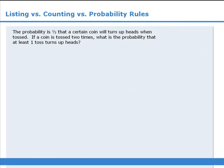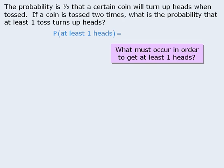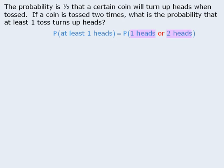Consider the following example. Here we are tossing a coin two times, and we want to find the probability that we get at least one heads. One approach is to ask: what must occur in order to get at least one heads? Well, this can occur if one of the coins turns up heads, or both of the coins turn up heads. Since these two events are mutually exclusive, we can rewrite our probability accordingly. However, we still have two separate probabilities to calculate, which could take a while.